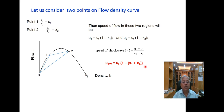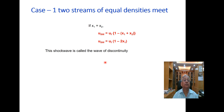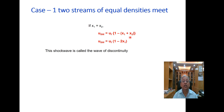Case 1: two streams of equal densities meet, meaning x_1 = x_2. The speed of the shock wave would be u_f × (1 − 2x_1). This shock wave is called the wave of discontinuity because the densities are the same.